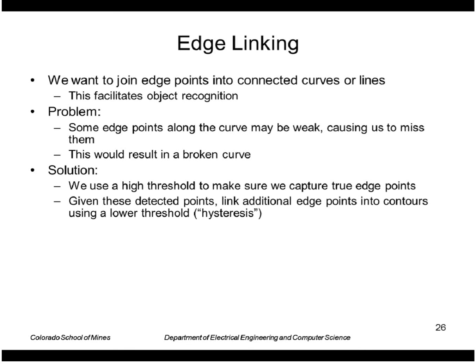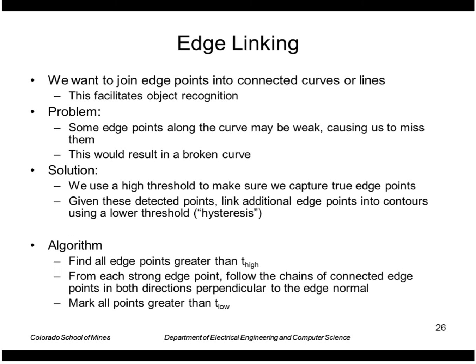A solution is to first use a high threshold to make sure we capture true edge points, and then given those detected edge points, follow the curve and pick up points that meet a lower threshold. So the algorithm finds all edge points greater than the high threshold, follows chains of connected edge points in both directions, and picks up those greater than the low threshold.